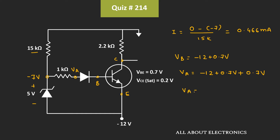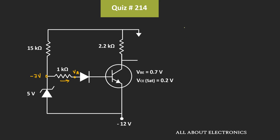That means the voltage Va will be equal to minus 10.6V. So in this case, if this Zener diode is turned on, then the current will flow through this 1kΩ resistor in this direction. The current through this 1kΩ resistor I will be equal to (−7 − (−10.6V)) / 1kΩ, which is equal to 3.6mA. We have seen that the current through the 15kΩ resistor is equal to 0.46mA, and the current through the 1kΩ resistor is equal to 3.6mA.